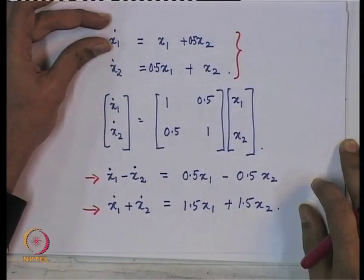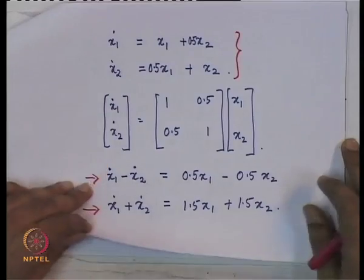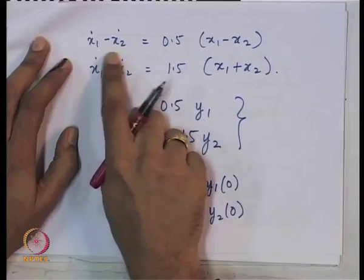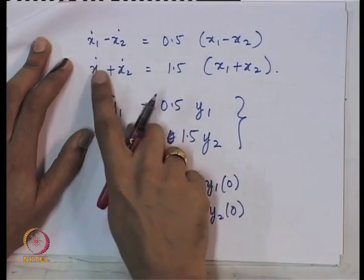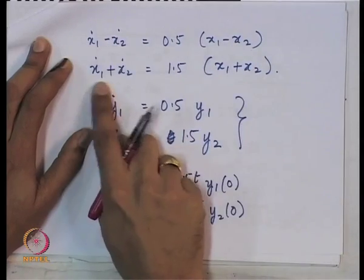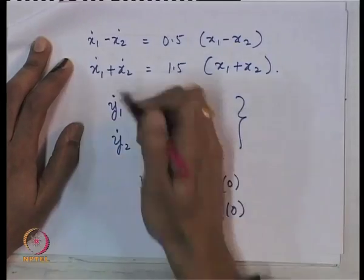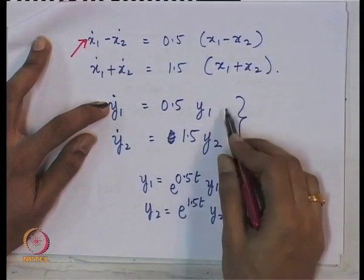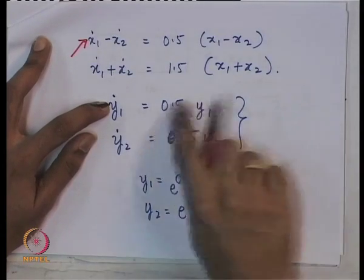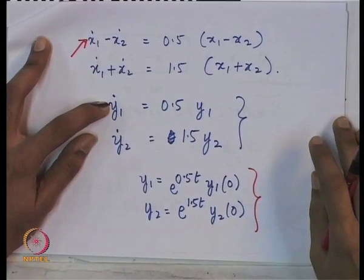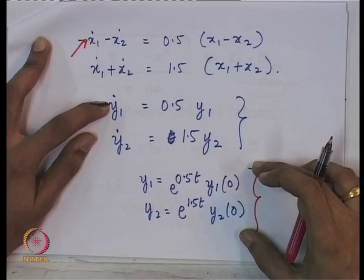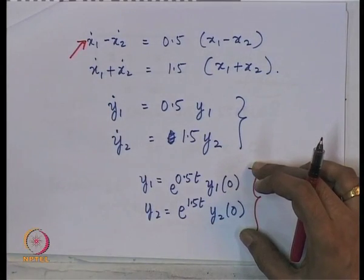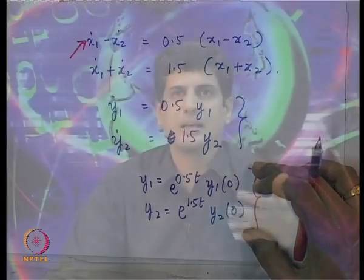This leads to a simple solution. We have not yet obtained the solution back in terms of x_1 and x_2 — we will do this formally in the next class. This will lead us to the general analysis of linear systems. Also, if your system is x_dot = A·x + B·u, the general solution can also be written neatly — we will cover this in the next class.